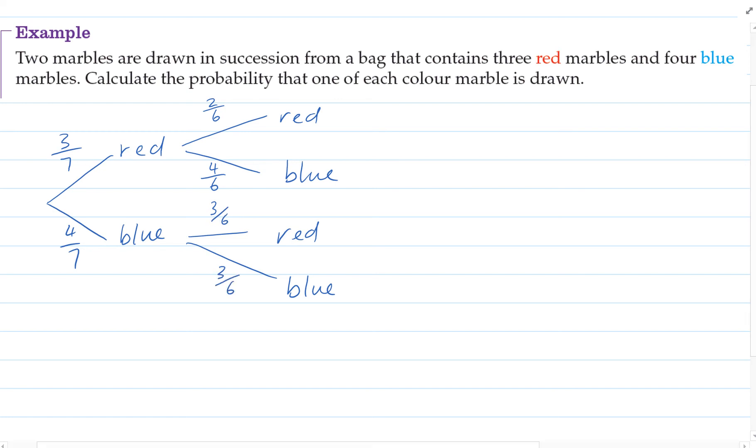So if we're looking at two different colors, that's where we would get red and then blue, or blue and then red. And so those are the two situations.